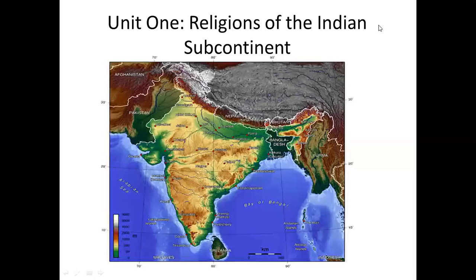This is going to be the final lecture for unit one, subtitled The Religions of the Indian Subcontinent. This is actually an optional portion of the course. If you're one of my students taking this class at Lone Star or HCC or another university or college, you can skip this if you want and move on to unit one and do Shinto instead, or you can do this one and skip Shinto. It's up to you.